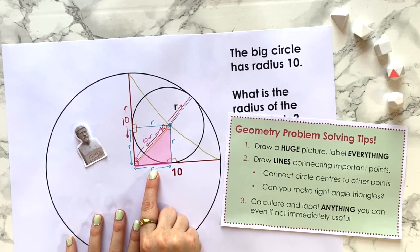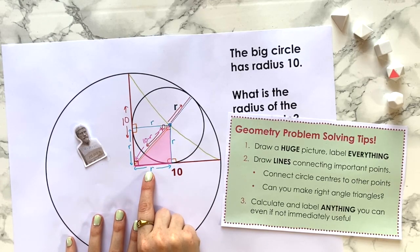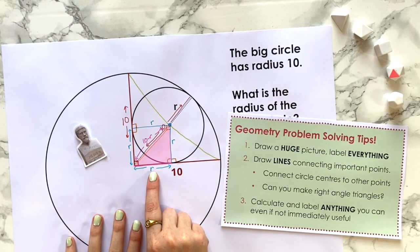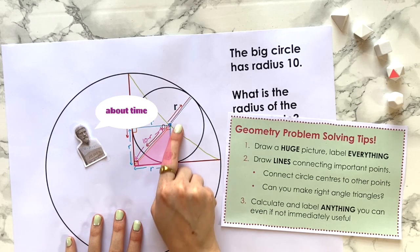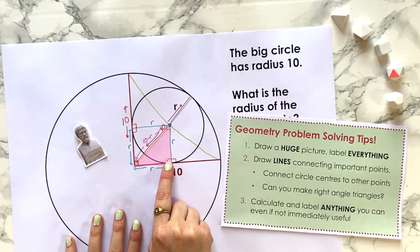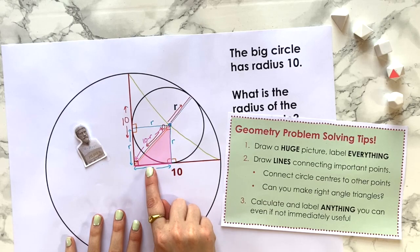Because it's a right angle triangle, we can use Pythagoras's theorem to write an equation down that connects all of these sides, and that we will then be able to use to solve for r.